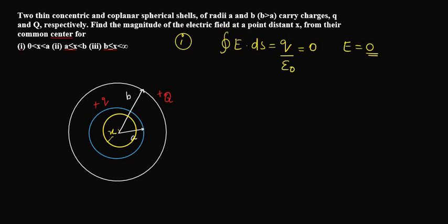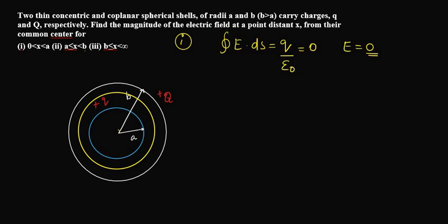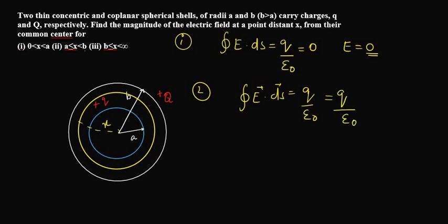Now the second case: the value of x is less than b but greater than a. We draw a Gaussian surface between the two shells. Applying Gauss's law, the integral of E·dS equals Q enclosed divided by epsilon naught. In this case the charge enclosed is q only, so we write q divided by epsilon naught.